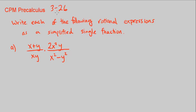This is CPM Pre-Calculus Chapter 3, Number 26. We want to write each of the following rational expressions as simplified single fractions. That means you want to combine them and just have one fraction.